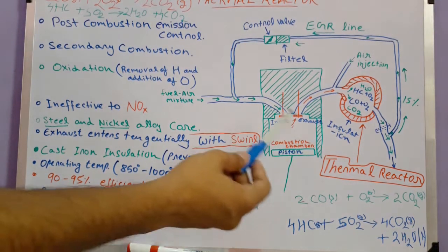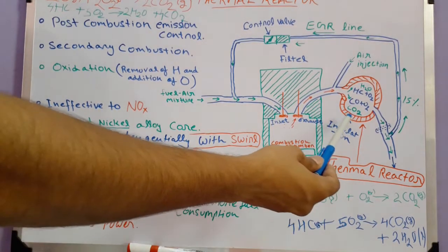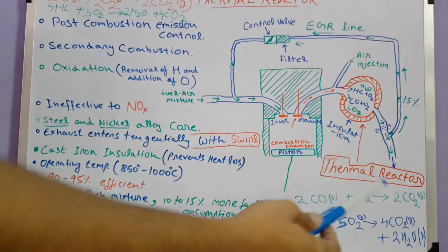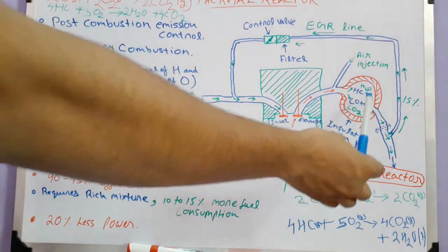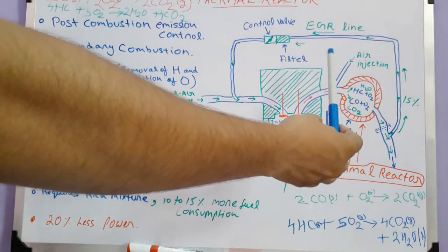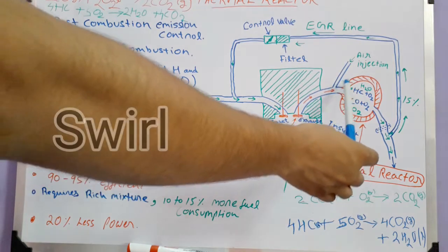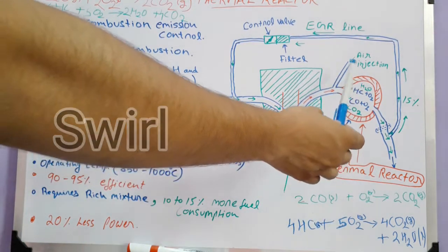The reactor core is made up of stainless steel and nickel alloy. Exhaust gas enters tangentially, which minimizes turbulence and creates a swirling effect.